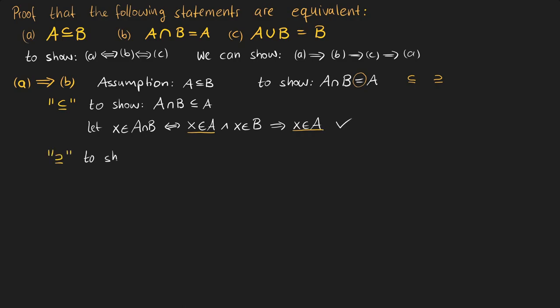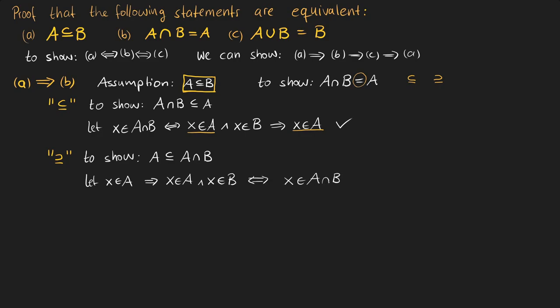For the other direction we have to show that A is a subset of the intersection of A and B. We start by taking a random element from A, so X is an element of A. Now we use our assumption that A is a subset of B. Therefore if X is in A, it is also in B. So X in A implies X is in A and X is in B, which is the definition of X being in the intersection of A and B.